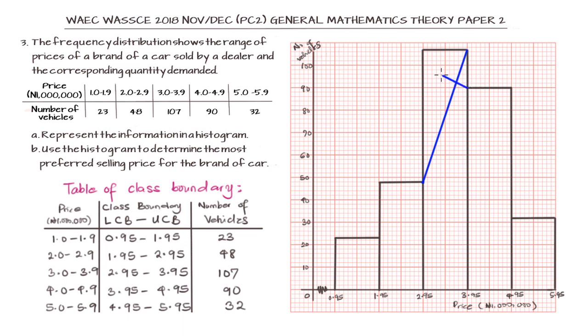And then the point of intersection, we can trace down to get the value of that point of intersection. And that will be the most preferred selling price for the brand of car. If we trace down that point of intersection, you can notice it on the horizontal axis, which is for the price.